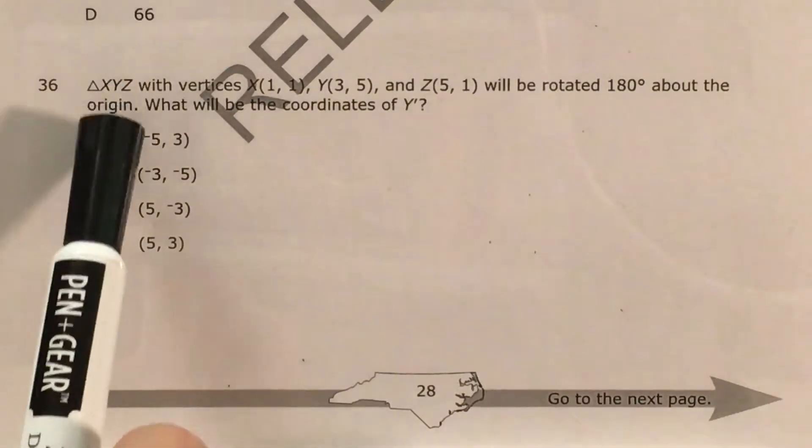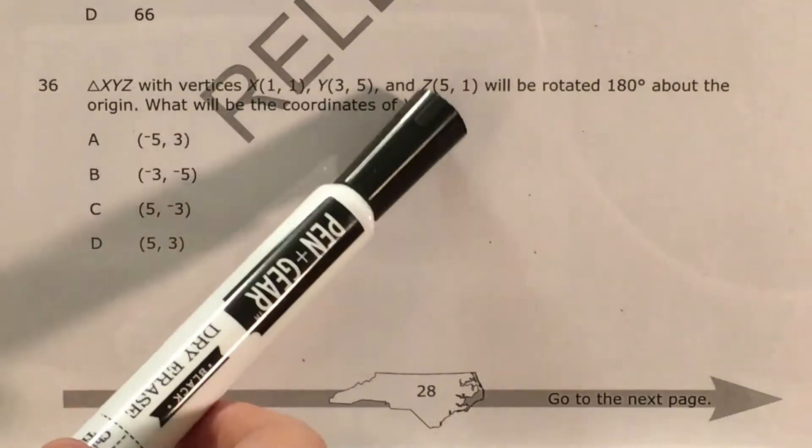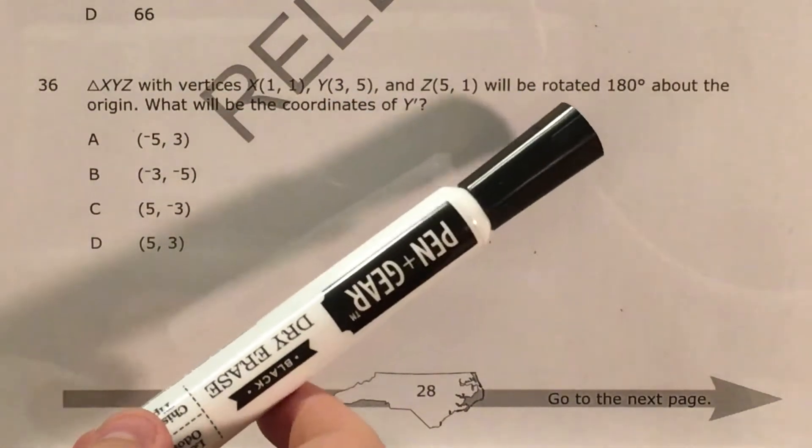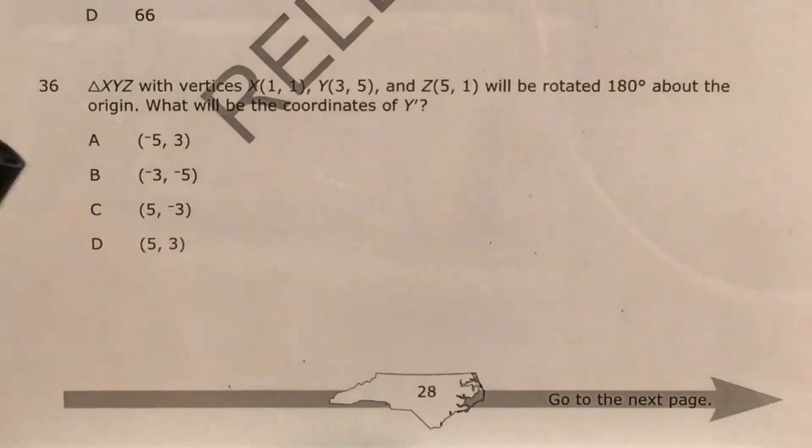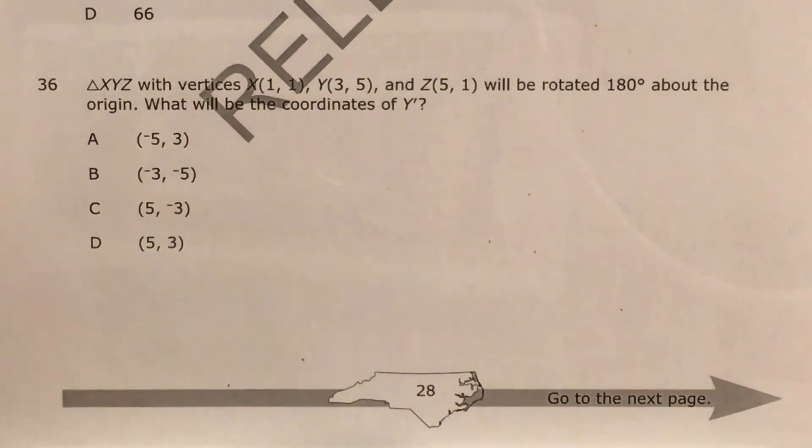The question tells us the triangle XYZ with vertices X, Y, and Z, and it gives us their coordinates, will be rotated 180 degrees about the origin. And we're trying to figure out what the coordinates are going to be of Y prime, the new Y.